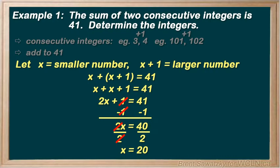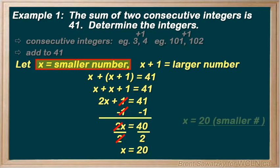Step 4. Let's refer back to the question. It says, determine the integers. So, what is that x equals 20 telling us, then? We documented that x equals the smaller number. So, our smaller number is 20. Great. But to fully answer the question, we also need to provide the larger number.